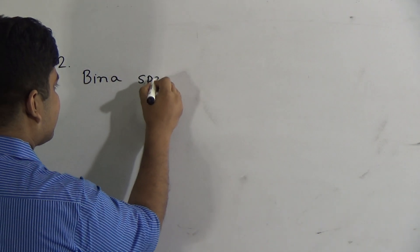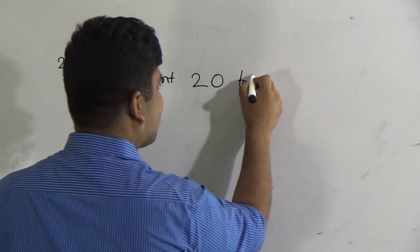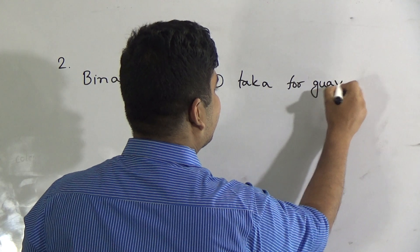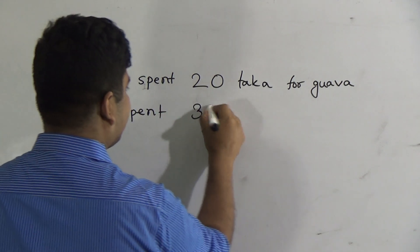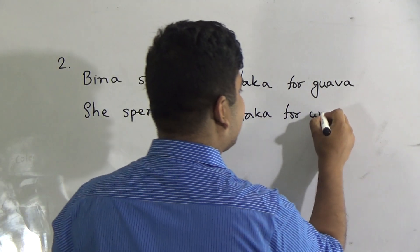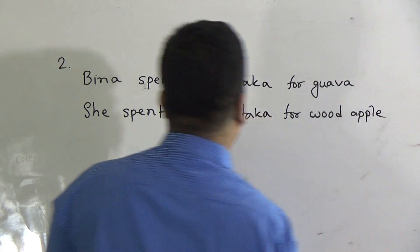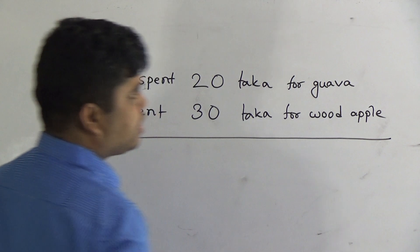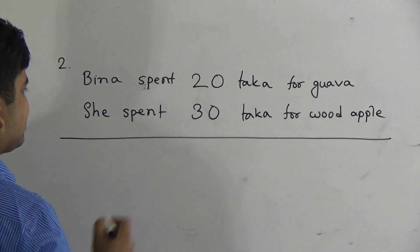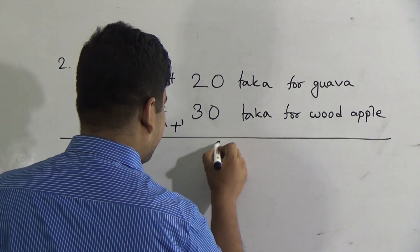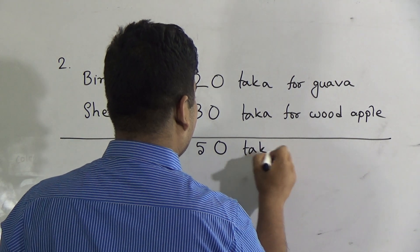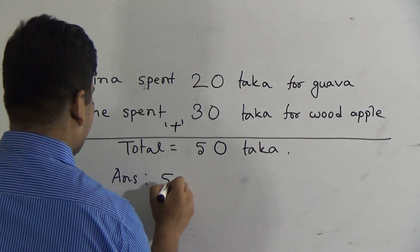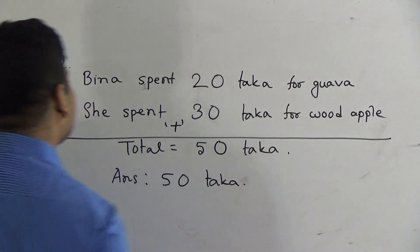We write: Bina spent 20 taka for guava. Since Bina is a girl, we write: she spent 30 taka for udapil. As we need to find the total cost, we do addition. Zero plus zero equals zero, three plus two equals five. Total: 50 taka. You must write the answer: 50 taka. Such easy math — I hope you can easily solve this.